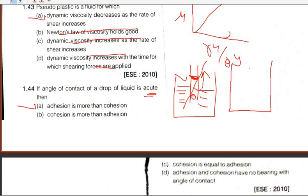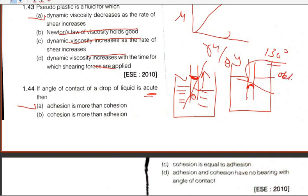The opposite happens in the case of non-wetting liquids like mercury, where a convex upward surface is seen and the angle of contact is obtuse, approximately 130 degrees. So A is the right answer for question 44.